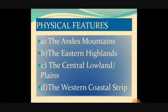The physical features are four in number. The first is the Andes Mountains, second the Eastern Highlands, third the Central Lowlands or Central Plains, and the fourth is the Western Coastal Strip. This continent has many snow-capped mountains, extensive evergreen tropical forests like the Amazon forest, vast fertile plains, and hot deserts. Its land features can be divided into these four categories, and we will discuss each one in detail.